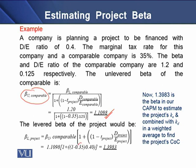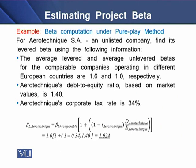Then, using this asset beta along with the tax structure and capital structure of the project, we can determine the levered beta for the project, or the project beta, which is 1.3983, or approximately 1.40. This project beta will be used in our CAPM model to estimate the project's cost of equity. We then use this project's cost of equity in combination with the project's cost of debt in a weighted average form to determine the project's overall cost of capital, or WACC.